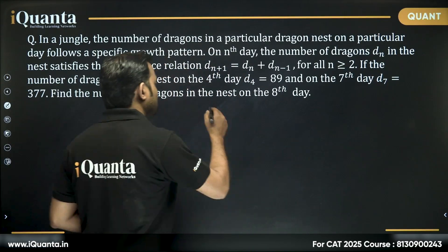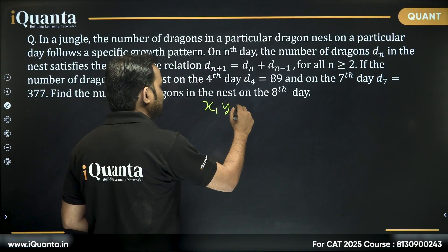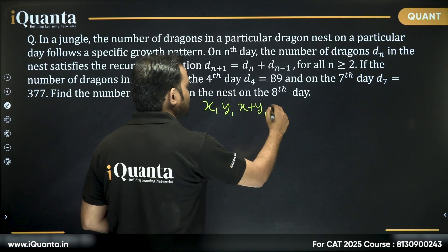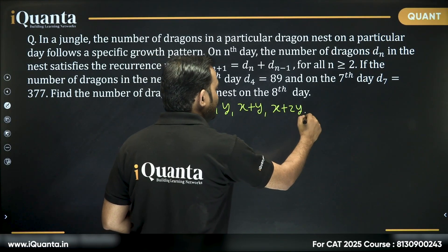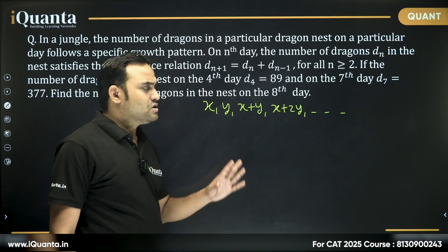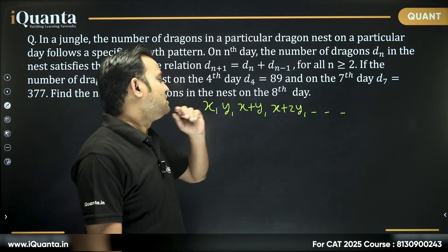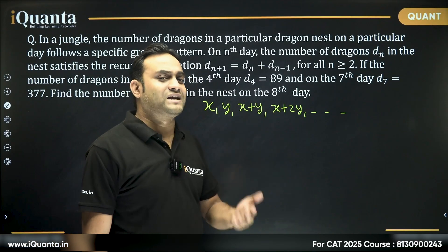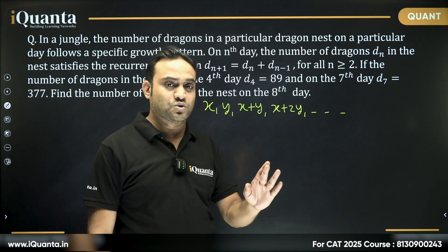fourth day, it will be x plus 2y, and so on. So, seventh day again, it will be on two variables x and y. So, we can solve it like this, but we don't need to.